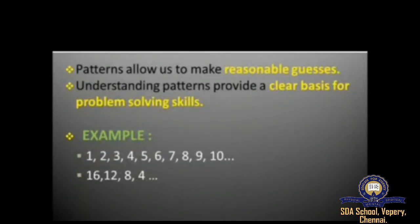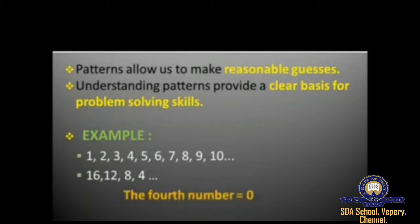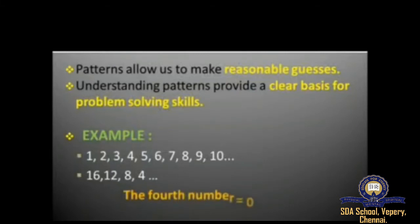So the next number will be 0, because when you subtract 0 from 4 the answer you get is 4. So the fourth number in the sequence is 0.